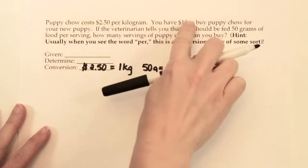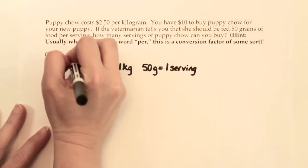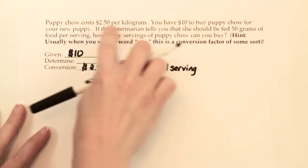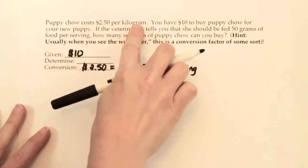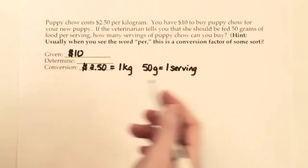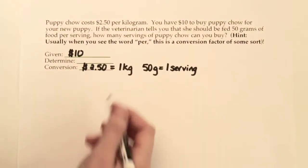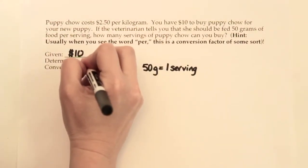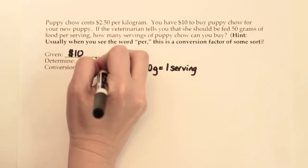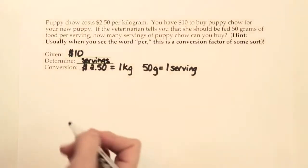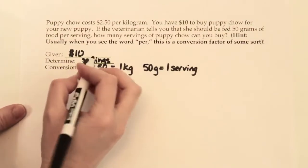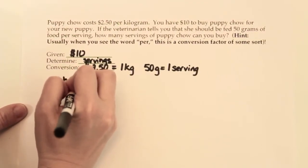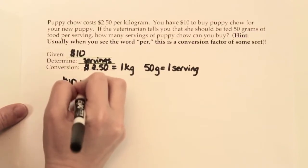That must mean that the $10 is our given. Usually the given has simpler units; when you have multiple units like dollars per kilogram or grams per serving, those are usually your conversion factors. So we're looking for how many servings of puppy chow we can buy. All factor label problems start with whatever you're given over the number one — so $10 over the number one.